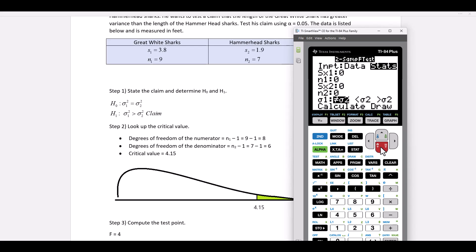Enter the first standard deviation, 3.8. The first sample size, 9. Second standard deviation, 1.9. Second sample size, 7. We have to select greater than. And then finally calculate.